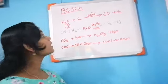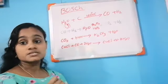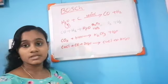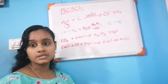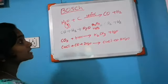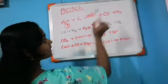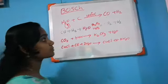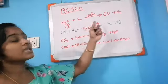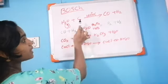In the Bosch process, first, steam — hot steam — is passed over hot coke (carbon) at 1000 degrees Celsius. We will get carbon monoxide and hydrogen. This reaction is an endothermic reaction. Steam is passed over hot coke at 1000°C to produce carbon monoxide and hydrogen.